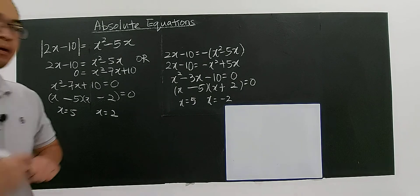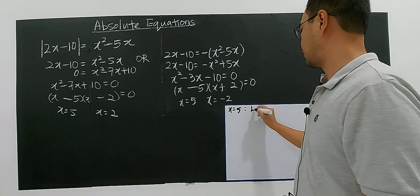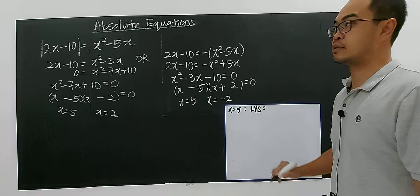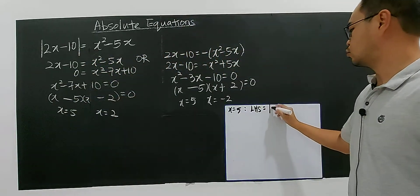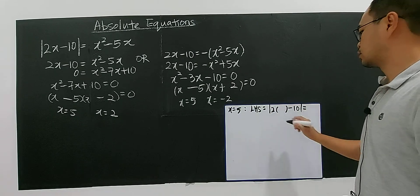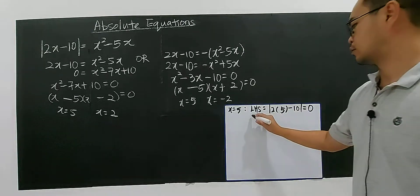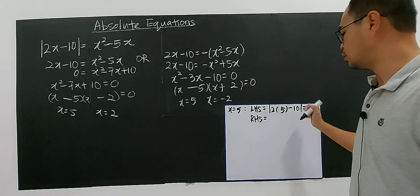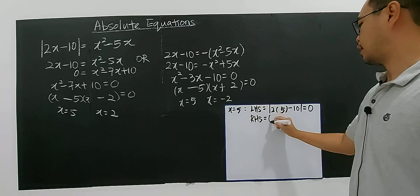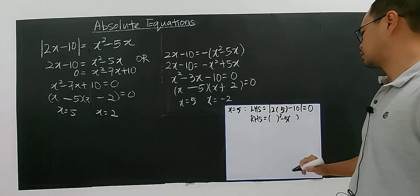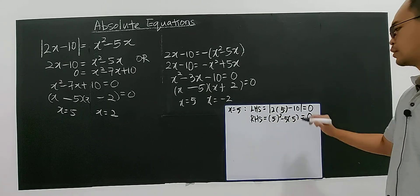Checking x equals 5: the left-hand side is modulus of 2x minus 10, so 2 times 5 is 10, minus 10 equals 0. For the right-hand side: x squared minus 5x gives 25 minus 25, which is also 0. So x equals 5 is a valid solution.